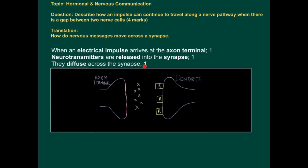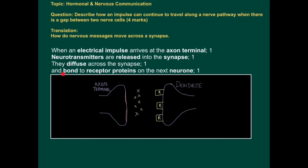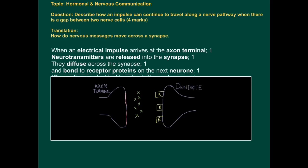They then diffuse across the synapse. That's an important thing to remember because they are in high concentration on this side, low concentration on this side. So they move to the other side by diffusion where they bond to receptor proteins on the next neuron, and you can see that happening here.